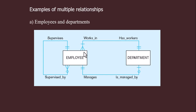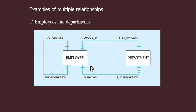Similarly, employees work in the department, but employees should work in only one department — so here it is mandatory one for department. The relationship type can also be changed — this relationship shows that an employee manages the department. An employee can manage only one department, so this one shows they can manage one department but it is optional.